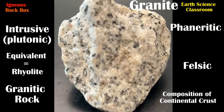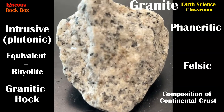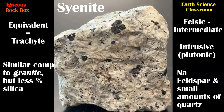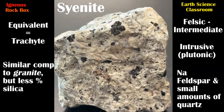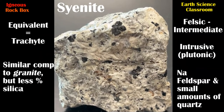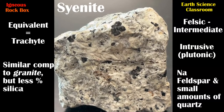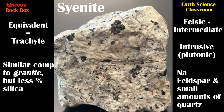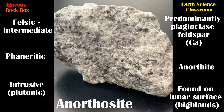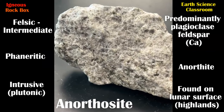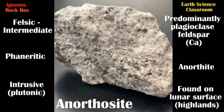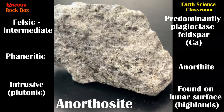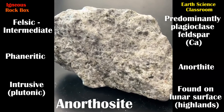Next is an intrusive rock that's very similar to granite but with less silica — it is syenite. It is intermediate and mostly feldspar. We're going to stay with the intermediate felsic intrusive igneous rocks. This one is anorthosite, which is awesome because it's found on the lunar surface of the moon.